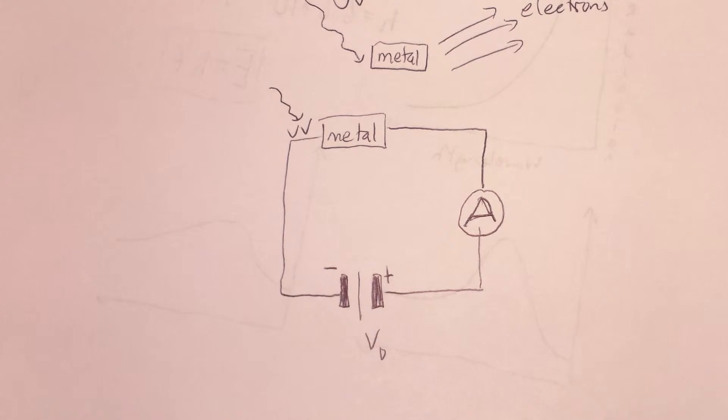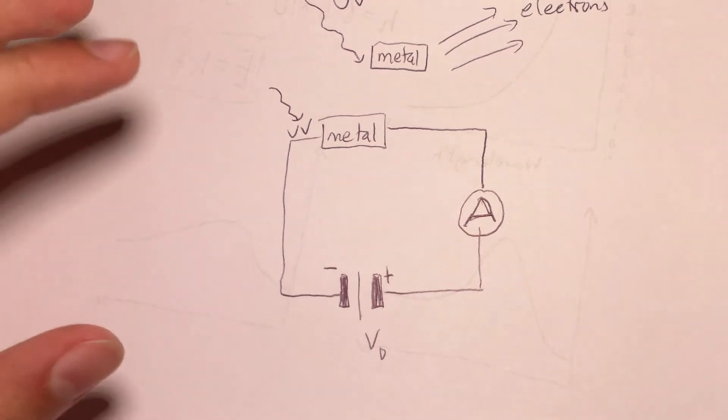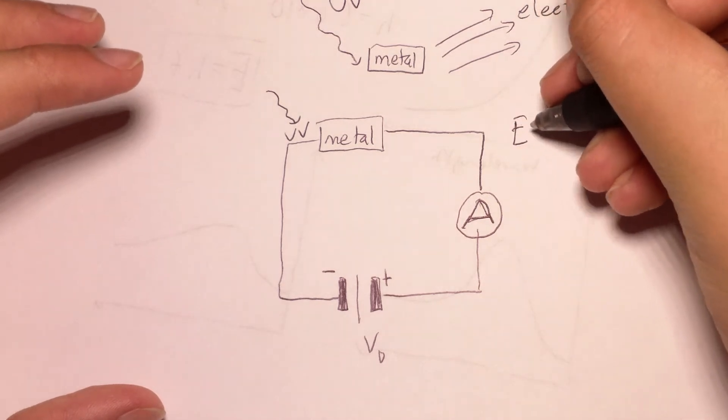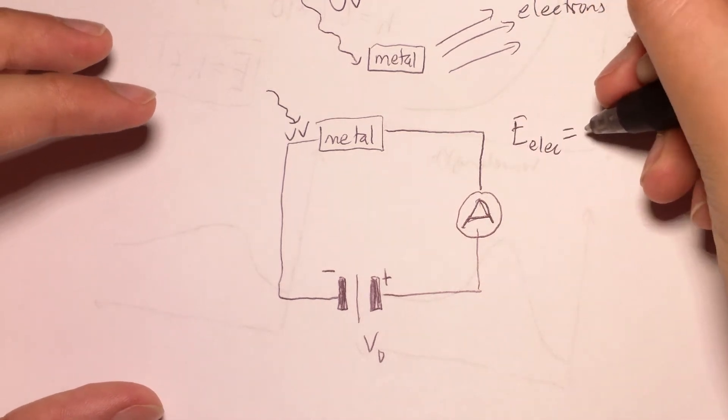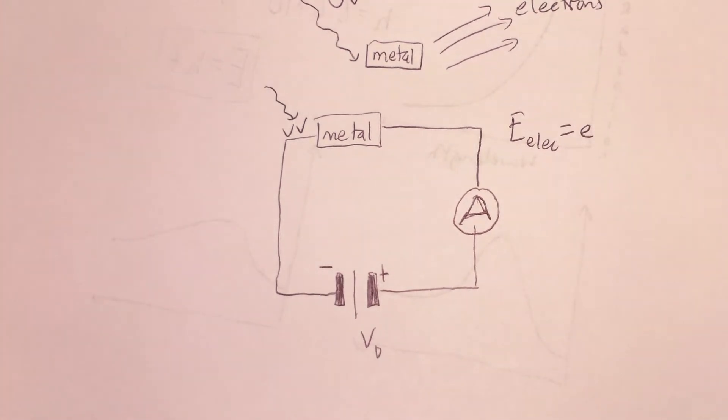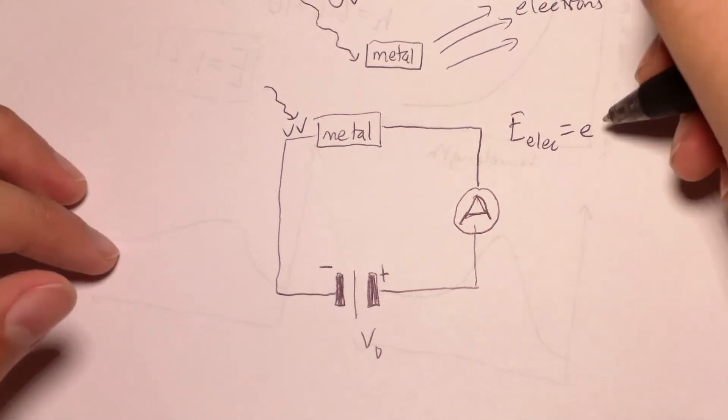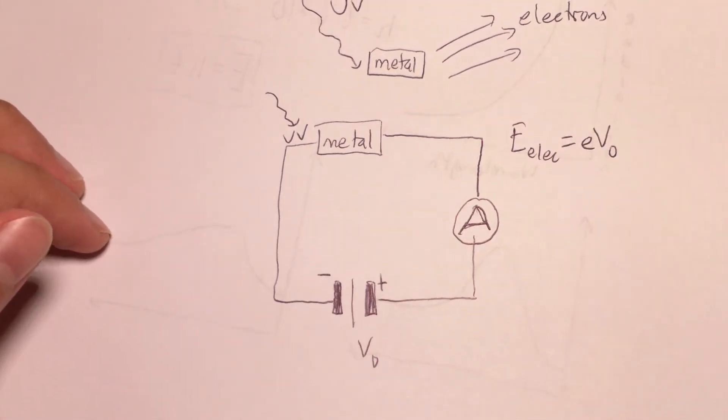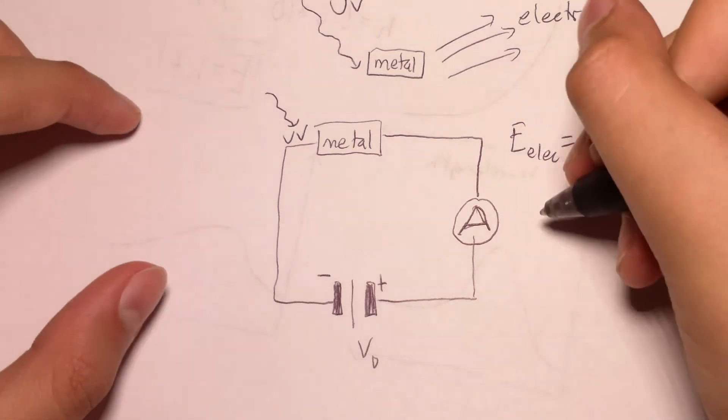So what you find is that if the electrons are stopped, then the energy of the electrons is the charge of the electron, which is a constant, times V0. Makes sense. And you'll find another thing which is that there is a minimum frequency of the UV light which will emit the electrons, which will cause the electrons to come out. And this is f0, which is a threshold frequency.